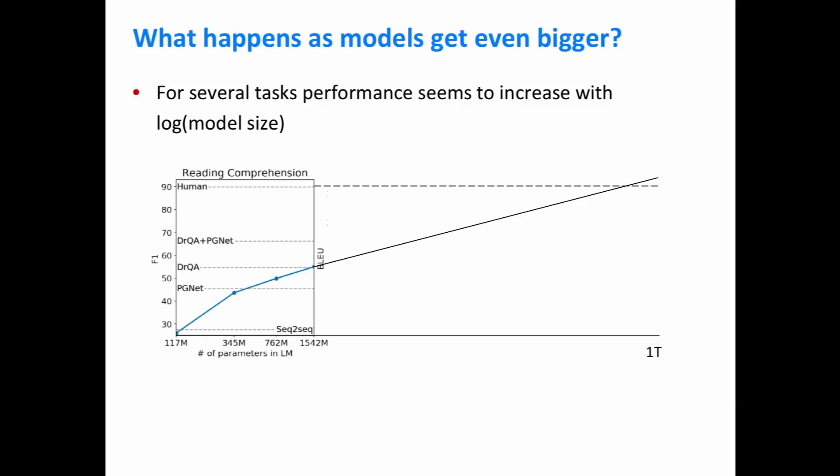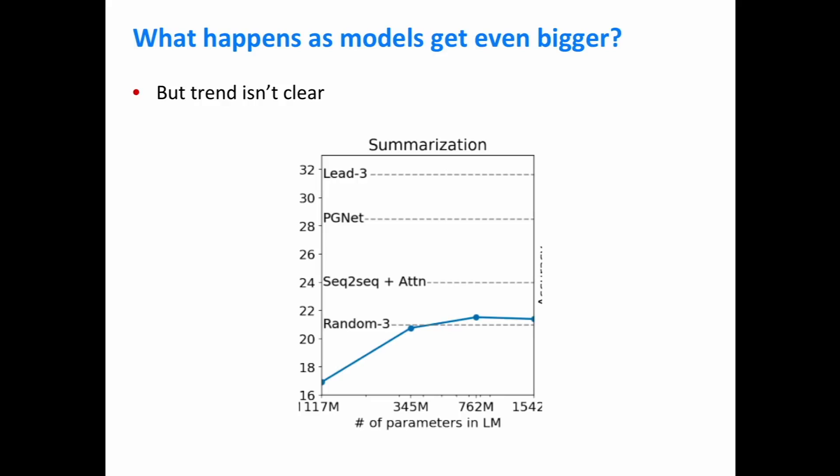What happens if our models get even bigger? By drawing trend lines in the zero-shot results, you can see that at about 1 trillion parameters, the model might reach human-level reading comprehension performance. I actually expect a 1 trillion parameter model would be attainable in perhaps 10 years or so. But for summarization, performance already seems to have topped out, so this scaling question will be a really interesting thing to look at going forward.